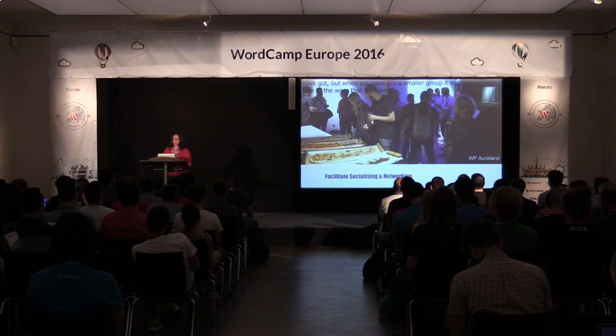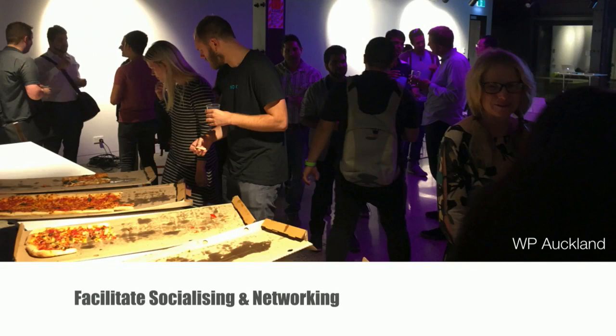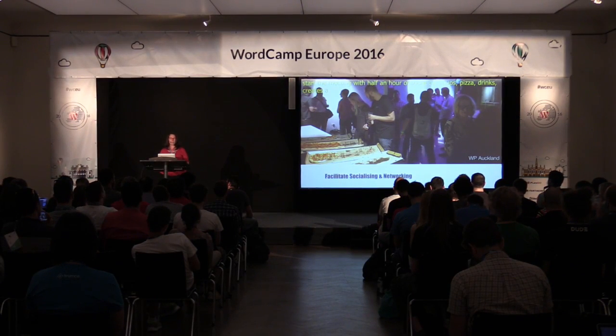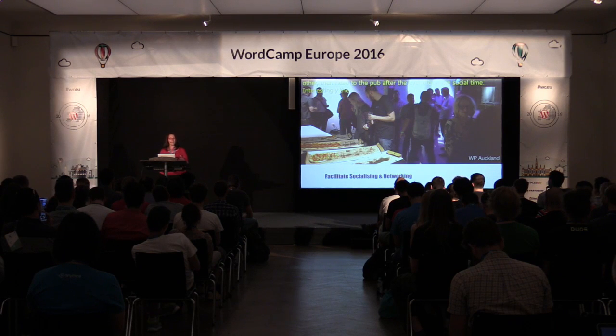One of the ways to facilitate welcome and bring people together is to provide food and drink for social time before the meetup programme. At our Melbourne main meetups, we start the evening with half an hour of social catch-up — we have pizza and drinks. It creates a great opportunity for people to get to know each other in a relaxed context. We also head to the pub after the event. Interestingly, social time more than the presentations has proven really valuable for people to forge friendships and collaboration opportunities. If you can create that atmosphere, your meetups will grow. As for cost, you could ask members to donate, or talk to sponsors — which we'll cover in more detail later.